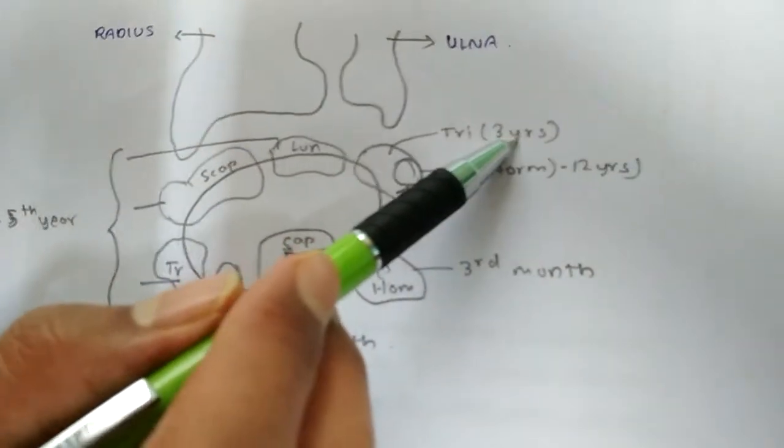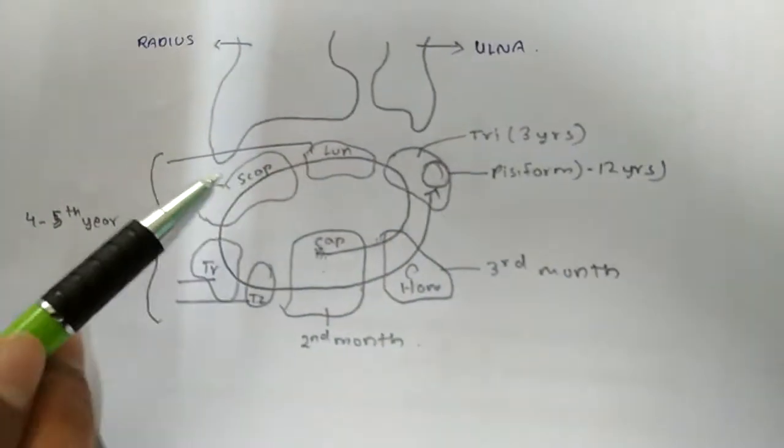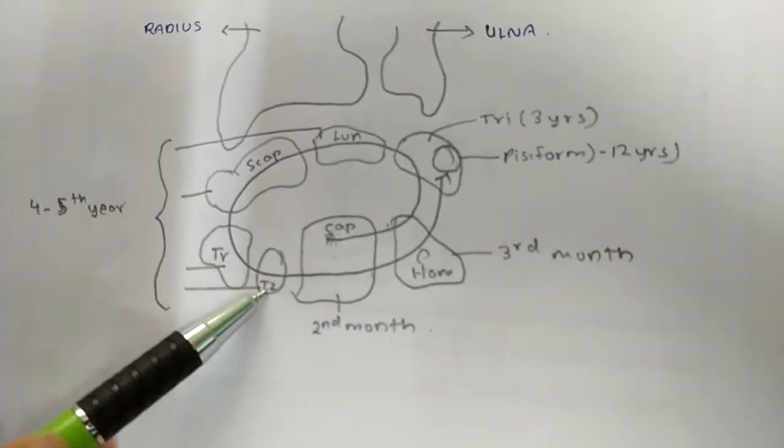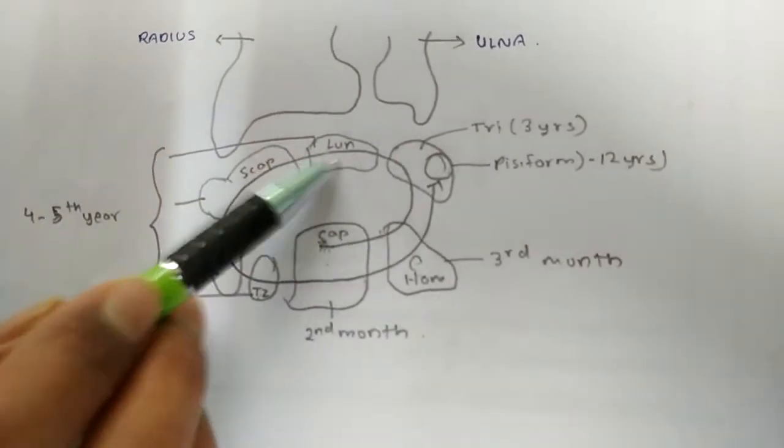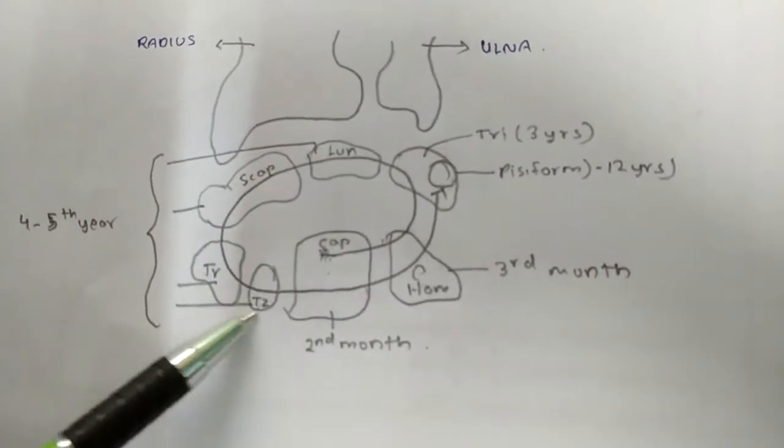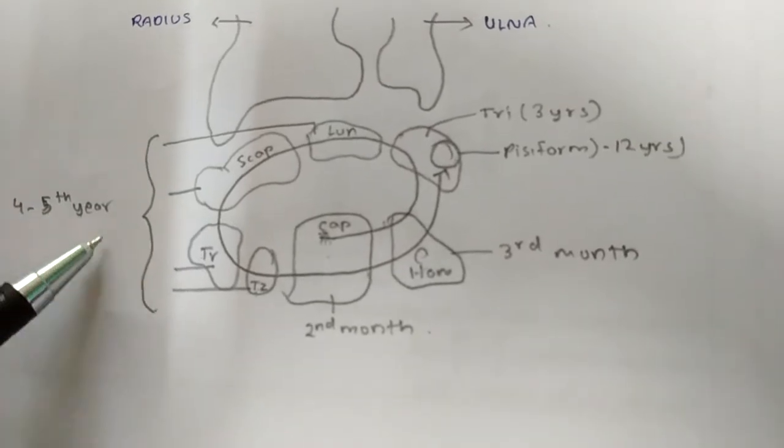The triquetral appears at three years. The lunate, scaphoid, trapezium, trapezoid, all these four, that is lunate, scaphoid, trapezium, trapezoid appear at four to five years.